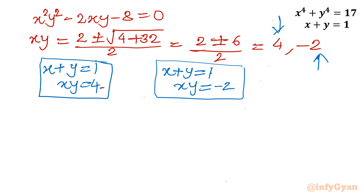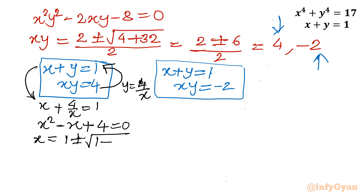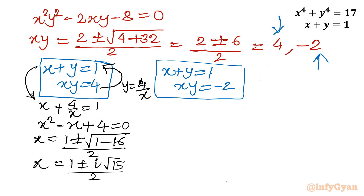For System 1, from xy = 4 we get y = 4/x. Substituting into x + y = 1 gives x + 4/x = 1, which becomes x² − x + 4 = 0. Applying the quadratic formula gives 1 ± √(1 − 16) / 2 = 1 ± √(−15) / 2, which involves a square root of a negative number. These are complex solutions, so System 1 is rejected.